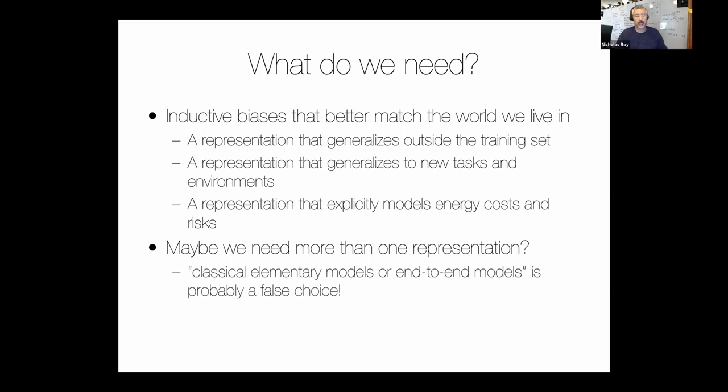We need to generalize to new tasks and environments. We need representations that explicitly model the energy costs and risks that combine data complexity, mechanical complexity, and computational complexity. Inductive bias is the right way to think about this because we need a way to preferentially choose some models or hypotheses over others. We don't have a good way of minimizing overall risk to the vehicle in terms of ending its life, in terms of picking the hypotheses we might be inferring. The last thing I want to say is we might actually need more than one representation. I think it's a false choice to posit classical elementary models or end-to-end models. Ingmar Posner at Oxford has argued strongly for a couple of years now that the right way to think about a lot of our robot learning is through dual process theory from the Thinking Fast and Slow book.